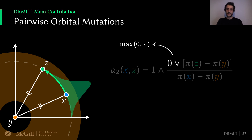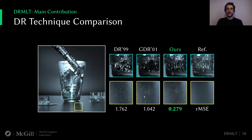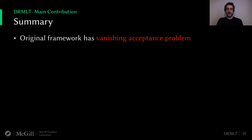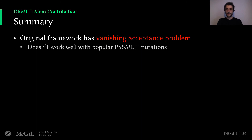If we compare the different delayed rejection techniques on the glass of water scene, we see that our approach offers a significant win at equal render time. The original DR framework often gets stuck, while the generalized framework fails to explore the tiny air packet in the water due to the extra tracing operation. Our approach offers a nice trade-off, as shown by a lower relative mean square error and smoother insets. To summarize, the original DR framework has a vanishing acceptance problem when applied to primary sample space MLT.